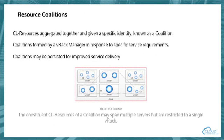These resources are aggregated together and given a specific identity — we call that a coalition. Each coalition will implement a single service, but these services could be parallel programs requiring a number of resources working in concert to deliver that service. So each node in the blueprint could require a number of resources in itself, and typically those resources would be of the same kind — all VMs of the same kind, containers of the same kind, servers with GPUs of the same kind, etc.